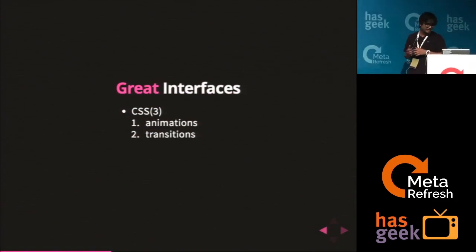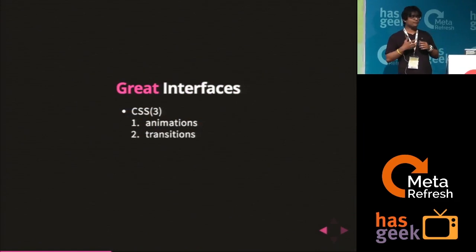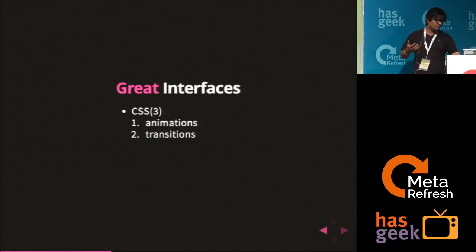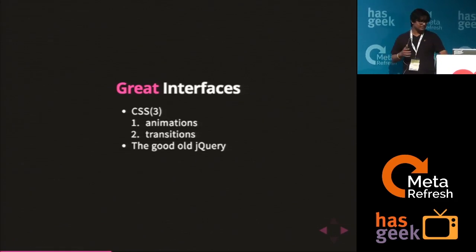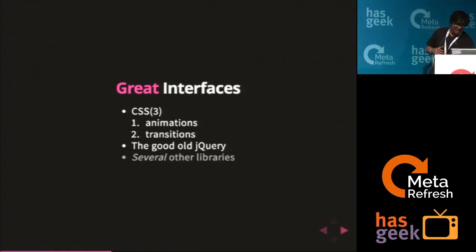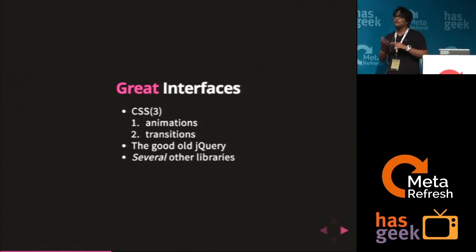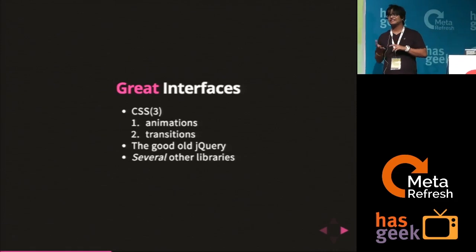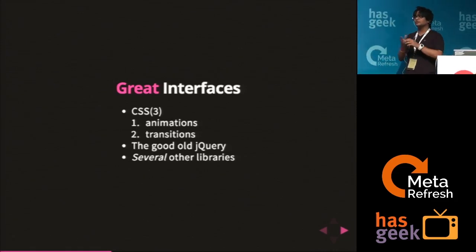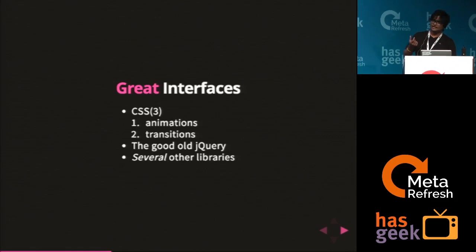How we make great interfaces: we use CSS3, we use animations, we use transitions. How do we control them? We use the good old jQuery. The jQuery UI is there. And there are several other libraries — animate.css, complicated transitions, everything can be done with d3.js. There's Twitter Bootstrap, which takes care of this sometimes.